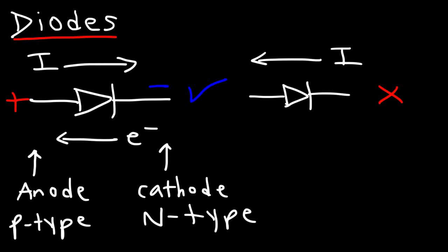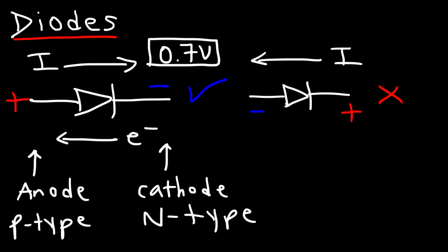For silicon diodes, the voltage drop across the diode is around 0.6 to 0.7 volts, but in this video I'm going to use 0.7. Now if you apply the negative terminal to the anode and the positive terminal to the cathode, it's not going to conduct electricity unless you exceed a threshold voltage.